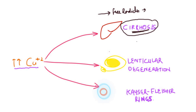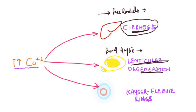The second clinical feature is lenticular degeneration. As blood levels of copper increase, copper begins to deposit in specific parts of the brain called the basal ganglia. Within the basal ganglia there are specific parts called the lenticular nuclei, and as copper deposits there it destroys them, resulting in several neurological symptoms. The main neurological symptoms are dementia and chorea — abnormal involuntary movements that are characteristic of a basal ganglia lesion.